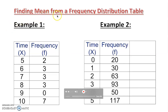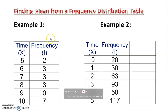Let's find the mean from a frequency distribution table. When we talk about mean, it's basically: you add all the numbers and divide by the number of numbers. It shows you the center. Once you know the numbers you can add all of them, but when you cannot see the numbers right away, they give you a frequency table.